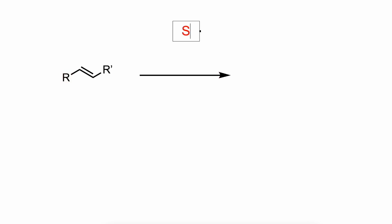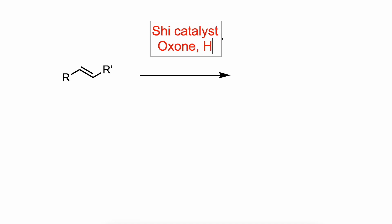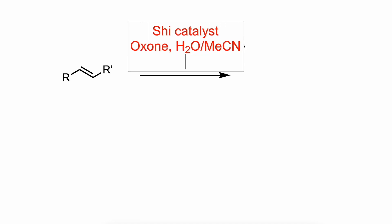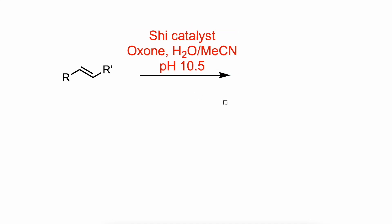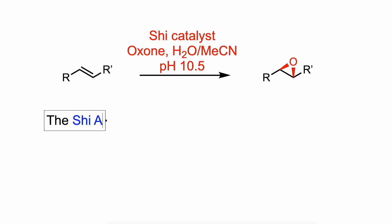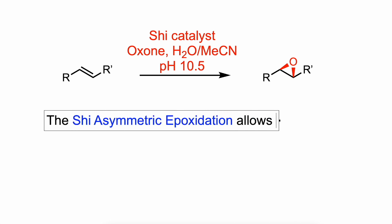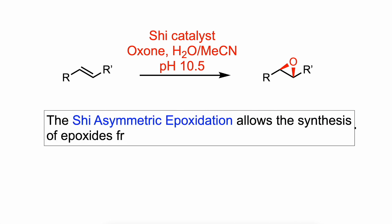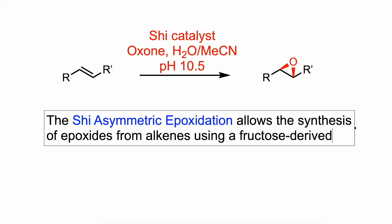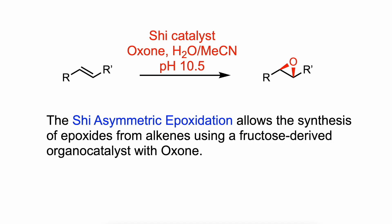Hello, everyone. In this video, I'm going to talk about the Sharpless asymmetric epoxidation. The Sharpless asymmetric epoxidation allows the synthesis of epoxides from alkenes using a fructose-derived organocatalyst with oxone.